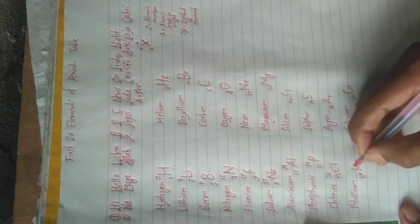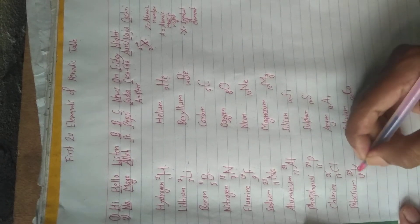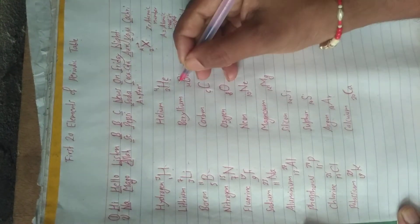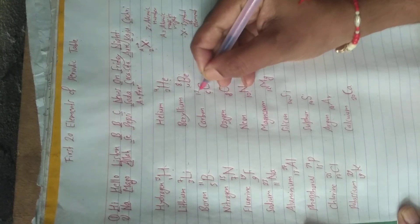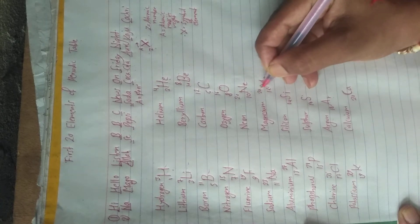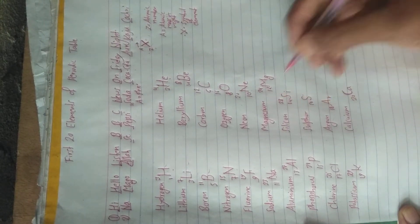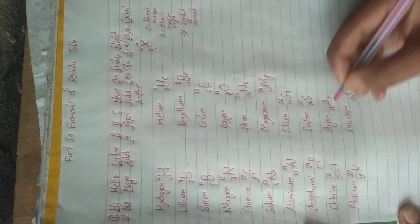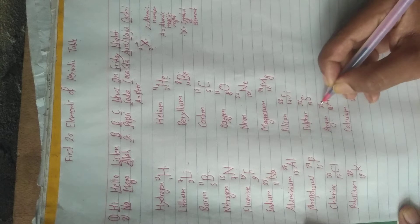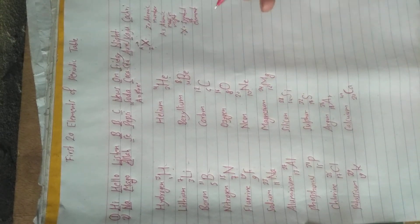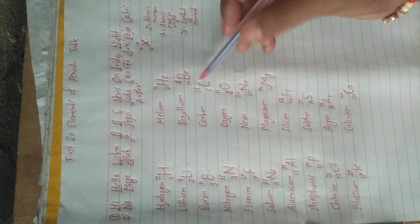For even numbers, just double: 2→4, 4→8, 6→12, 8→16, 10→20, 12→24, 14→28, 16→32, 18→36, 20→40. We have written these now. However, there are a few exceptions — elements that do not give us the exact atomic mass with this formula.